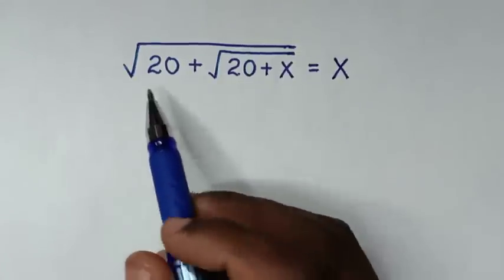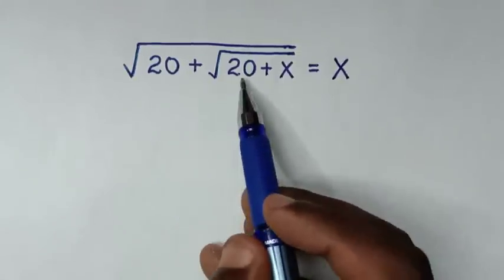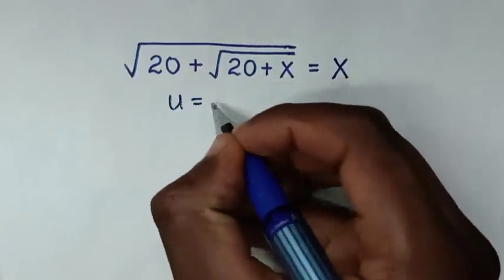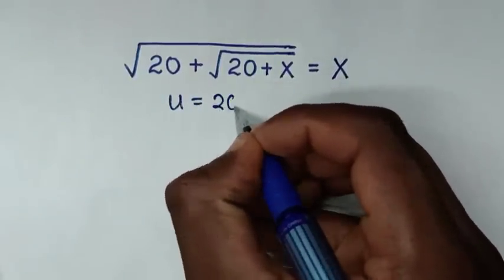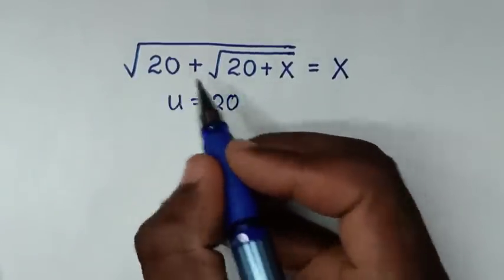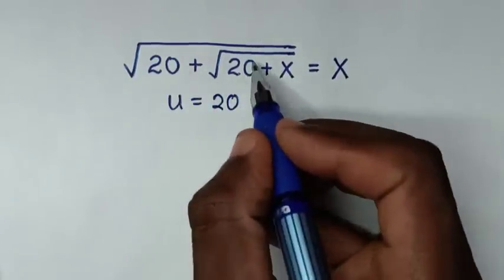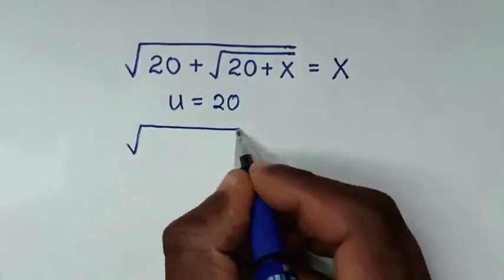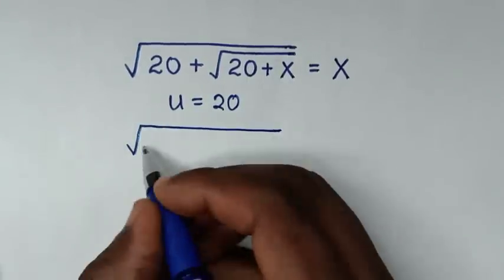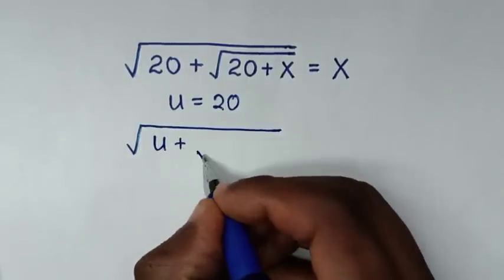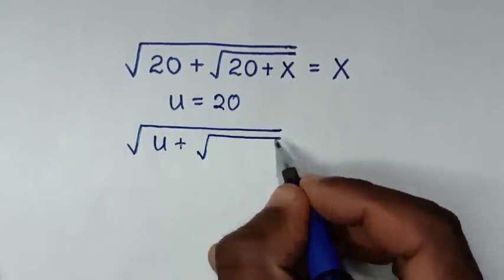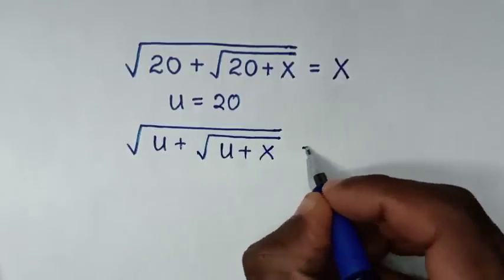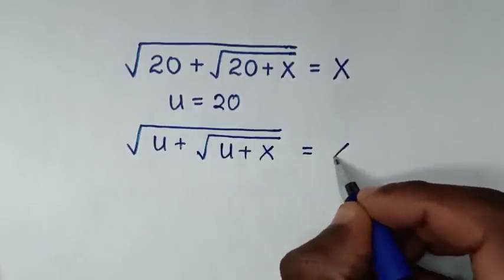In the first step, we have this common 20, so we let u equal to 20. We substitute u in both places. Therefore it will be: square root of u plus square root of u plus x, is equal to x.